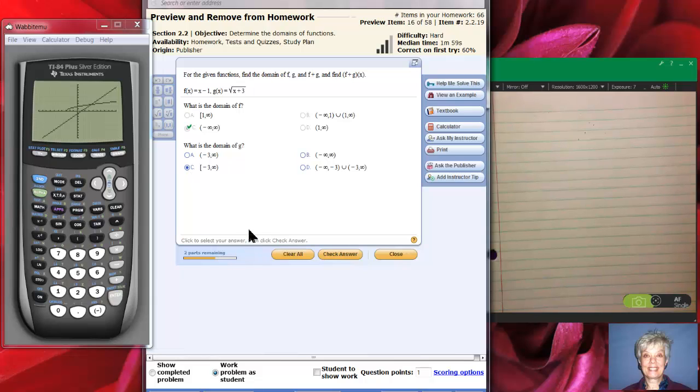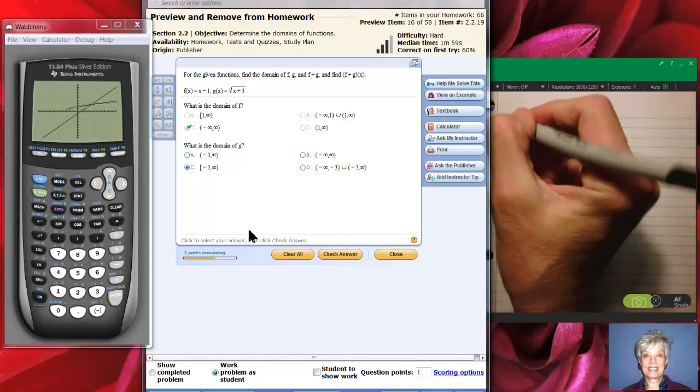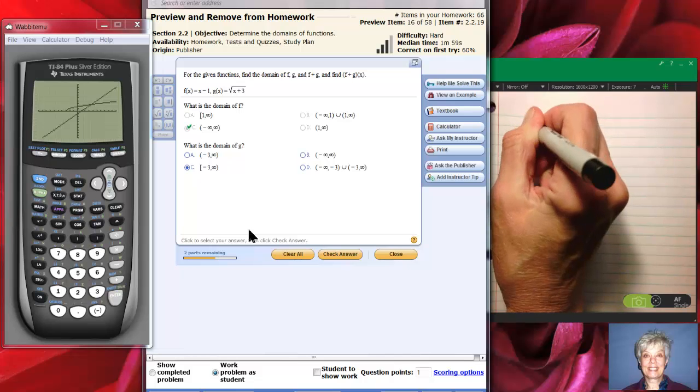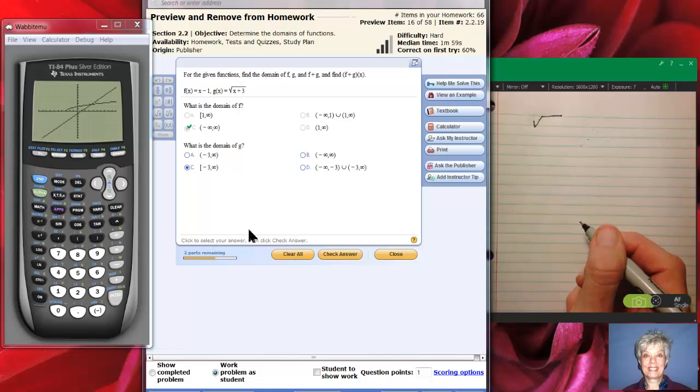Now let me show you how to do this if you're just working with paper. Remember, you know that if you have the square root of anything in our number system you can't have a negative underneath the radical.